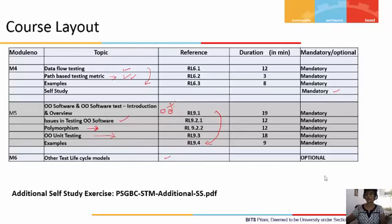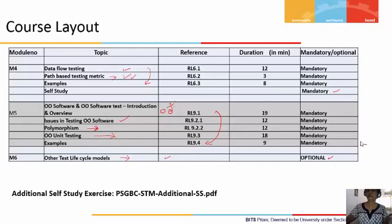There is one optional module — the final module — which covers other test cycle and life cycle models, including Agile and Scrum models and their use in the industry. This is made optional because the coverage up to this point takes almost 7 hours of listening, plus approximately 6 to 7 hours of self-study work. It is quite likely you may not have the time to visit this module, but if you do, please come back and listen to the recordings.